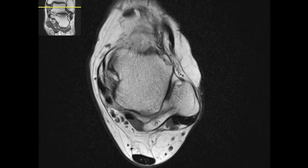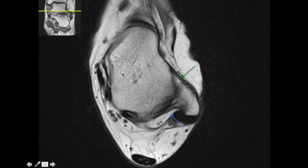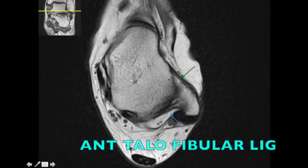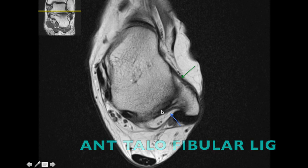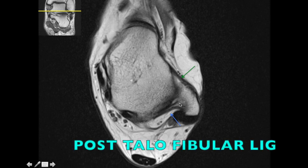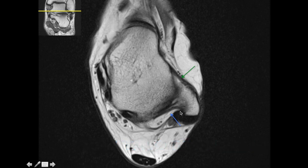Going further inferiorly, at the place where the talus has a figure-of-8 appearance, a thick band is seen between the talus and the fibula — this is the anterior talofibular ligament. Posteriorly, you have the posterior talofibular ligament. Some hyperintense signal with a striated appearance is seen towards the fibular attachment of the posterior talofibular ligament — this is normal and should not be mistaken for a tear. Remember, the posterior talofibular ligament is one of the last ligaments to get injured in ankle sprain.